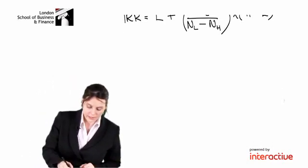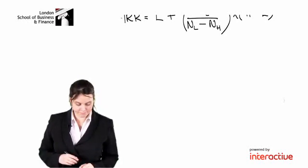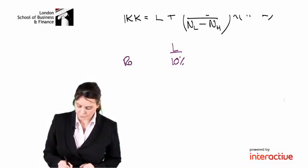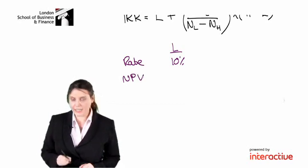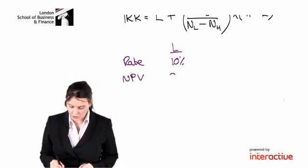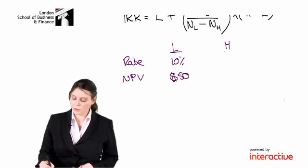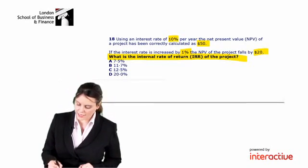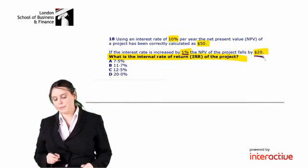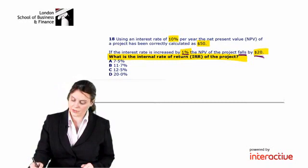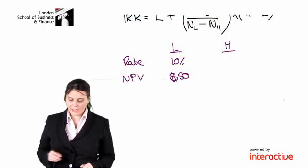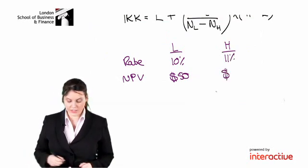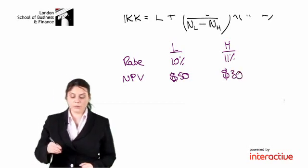In this question, we have been given a lower rate of 10% and the NPV at that lower rate was $50. We've also been given information about our higher rate. So we've been told if the rate is increased by 1%, the NPV falls by $20. So if the NPV goes up by 1% to 11%, the NPV goes down by $20, so it'll be only $30.